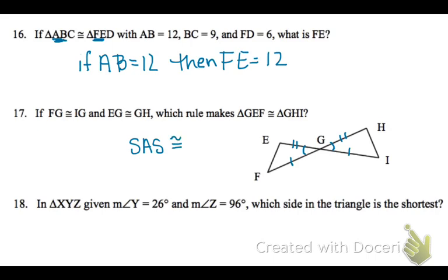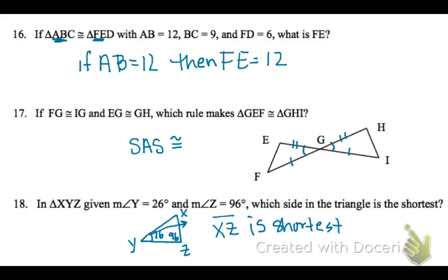On number 18, if you draw a picture of your triangle, angle Y is 26 degrees, angle Z is 96 degrees. Add those up and subtract from 180, and angle X is going to be bigger than 26 degrees. So XZ is across from the 26-degree angle, making XZ the shortest side.